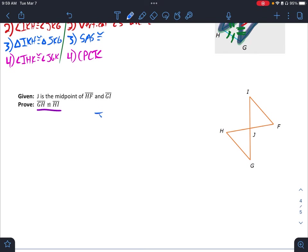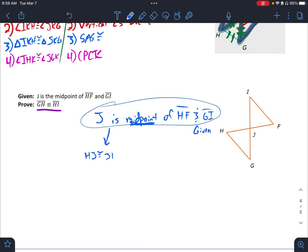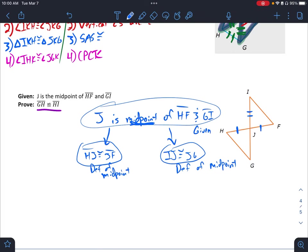I'll do this one back as a flow chart. So, J is midpoint of HF and GI. This is given. What does this mean? I'm going to have to define this. So, if it's the midpoint, that means HJ is congruent to JF. Definition of midpoint. I know that IJ is congruent to JG. Definition of midpoint. So, here's what I've just said. Label it in the picture.